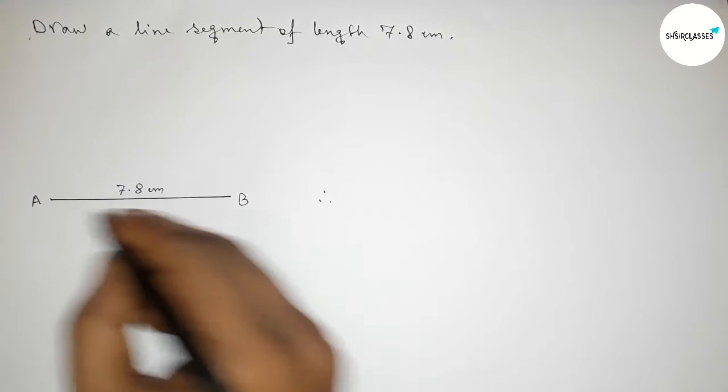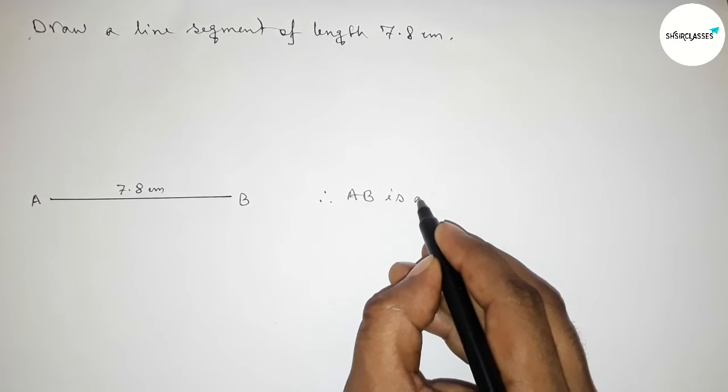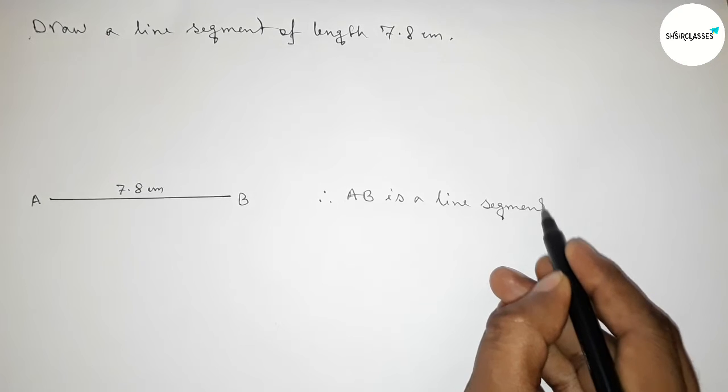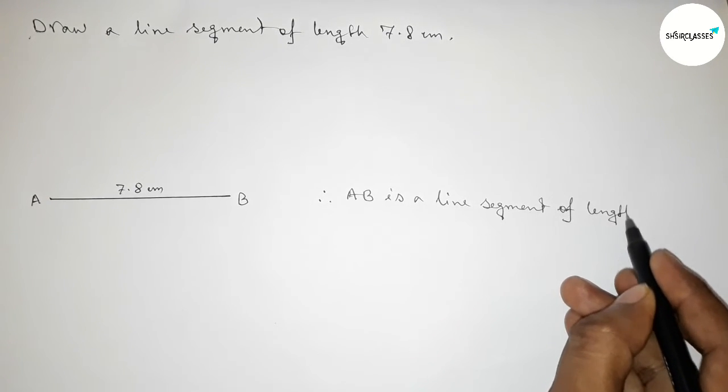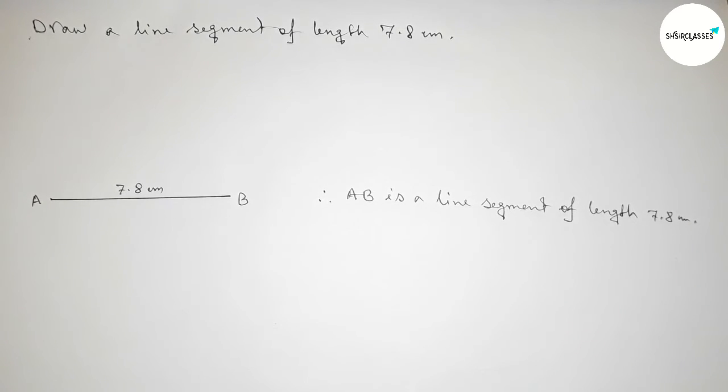Therefore, we can say that AB is a line segment of length 7.8 centimeters. By this way, you can draw a line segment with the help of a scale. That's all, thanks for watching. If this video is helpful to you, then please share it with your friends. Thanks for watching.